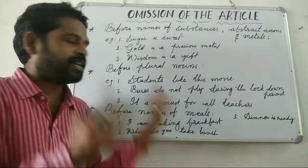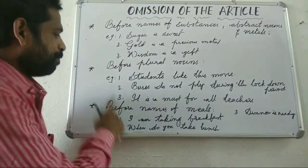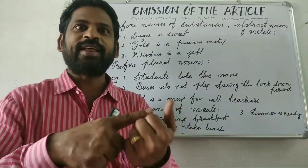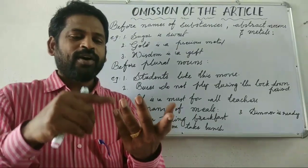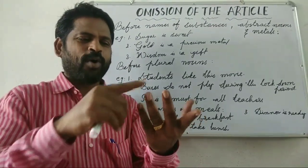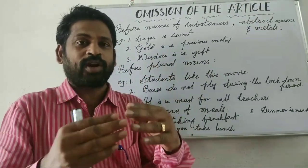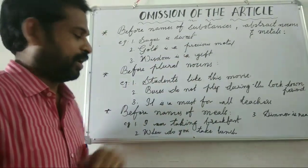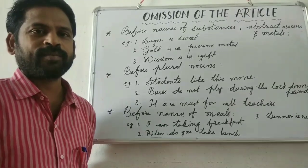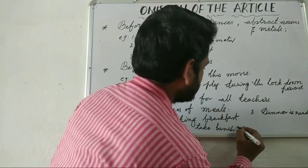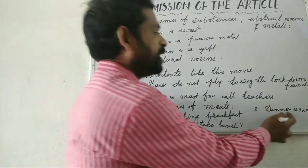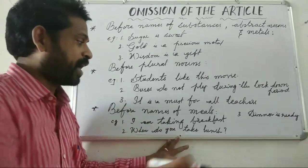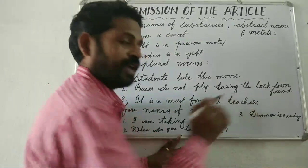Before names of meals — we take breakfast, lunch, brunch, and dinner. Brunch means breakfast and lunch together. These meals do not need 'the' in front of them in general. For example: 'I am taking breakfast', 'When do you take lunch?', 'Dinner is ready' — there is no article here. But there is a context where you can use 'the breakfast', 'the lunch', 'the dinner' — that is again for a particular thing.